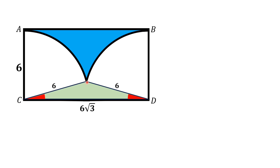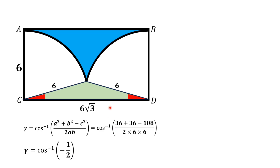Now we find this angle of the triangle at this point. By using the law of cosines when 3 sides are given, the law of cosines gives us this relation. Here a = 6, b = 6, and c = 6√3. Substituting these values in the formula, we get gamma equal to cos inverse of (−1/2), which gives the angle as 120 degrees. Thus this angle is equal to 120 degrees. The remaining two angles are equal to 60 degrees total, and since this is an isosceles triangle, each of those two angles is 30 degrees.